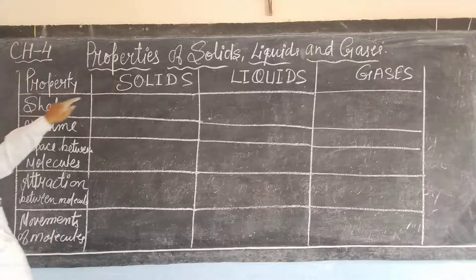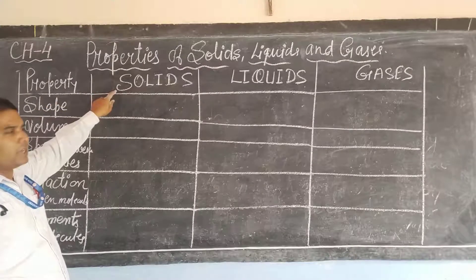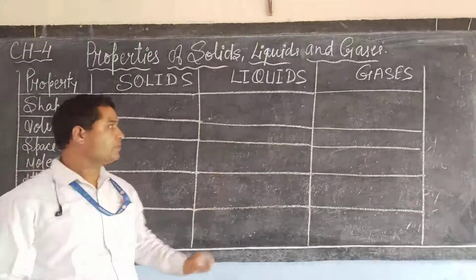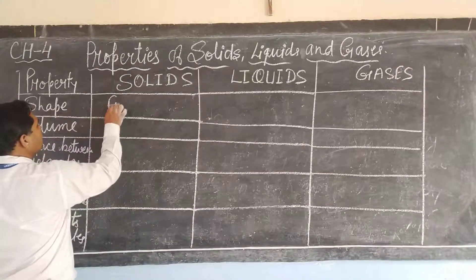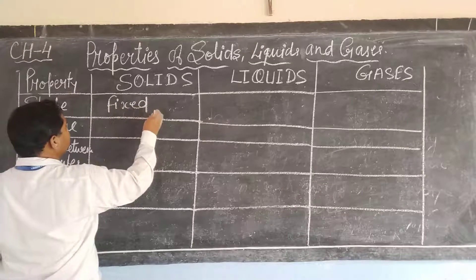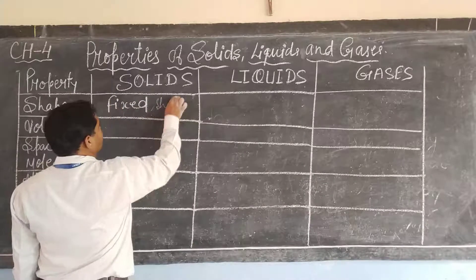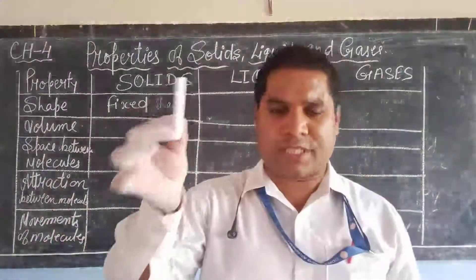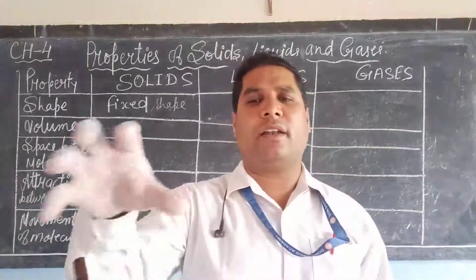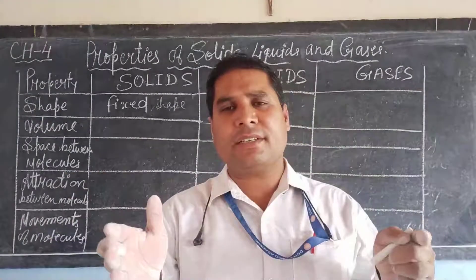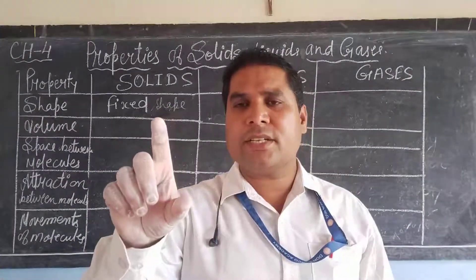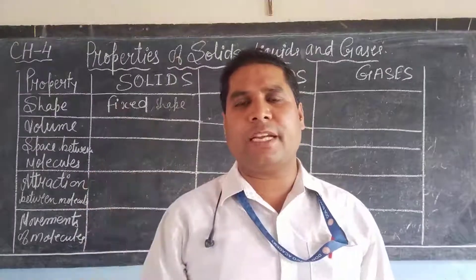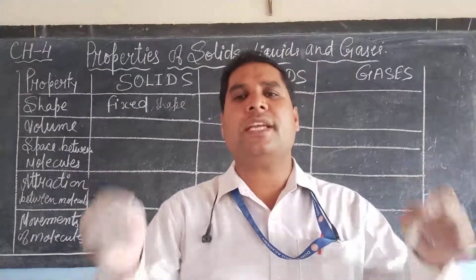So the first property is shape. Solid has a fixed shape. As you see this chalk — this chalk has a fixed shape. Duster, table, bench, water bottle, mobile phone — all have a fixed shape. The reason behind it is solid. All solid substances have a fixed shape because their atoms are closely packed.